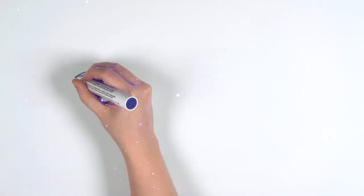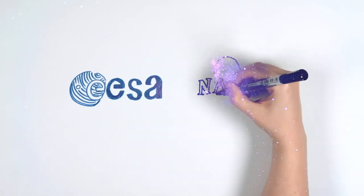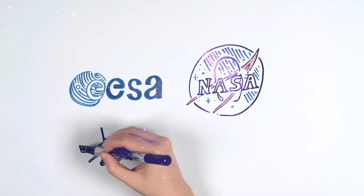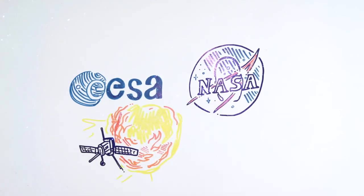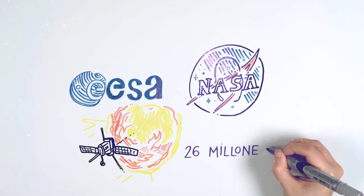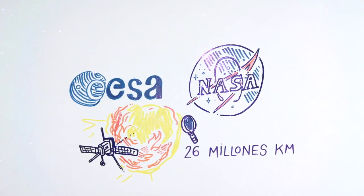In a collaboration between the European Space Agency and NASA, the Solar Orbiter was launched into space on February 10, 2020. The mission is for the Orbiter to reach a distance of 26 million kilometers from the sun and study its behavior.